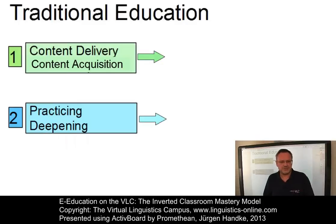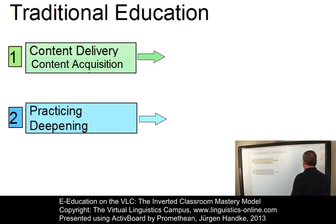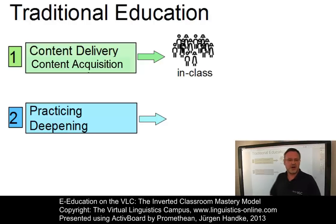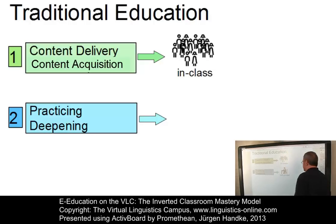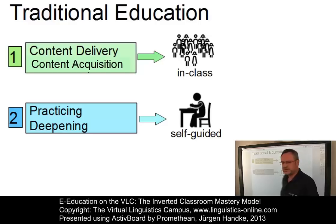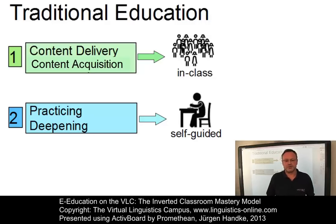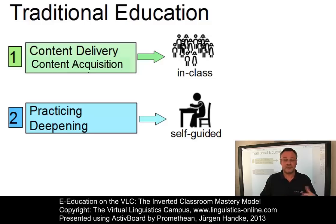In traditional teaching and learning scenarios, content delivery and content acquisition are realized in class. In a second phase, students practice on their own on the basis of additional exercise material, homework tasks, etc. In this traditional model, seen from a student's perspective, phase one is the least interactive part of learning and phase two is the most interactive.